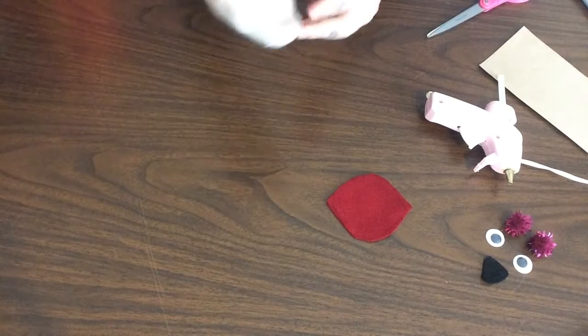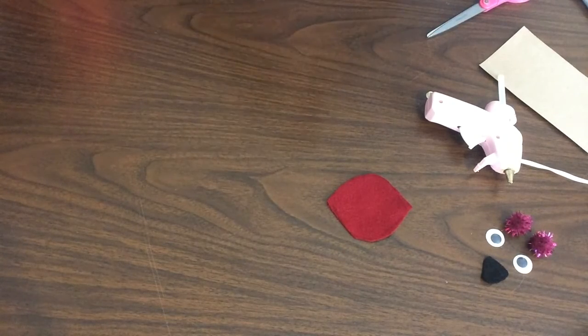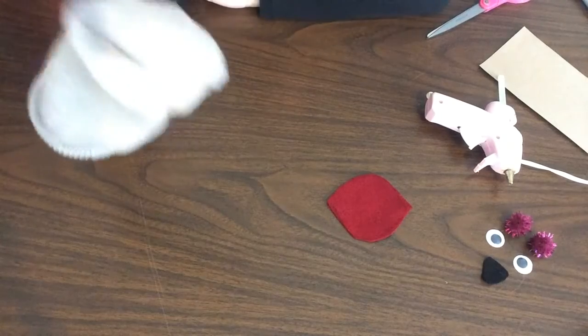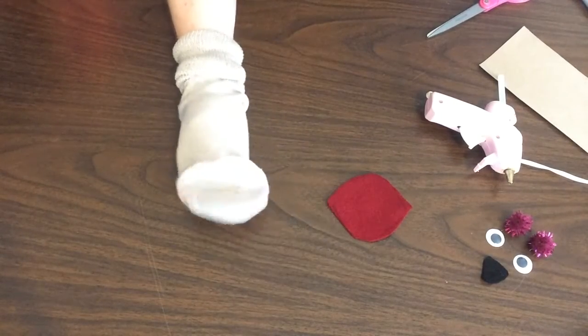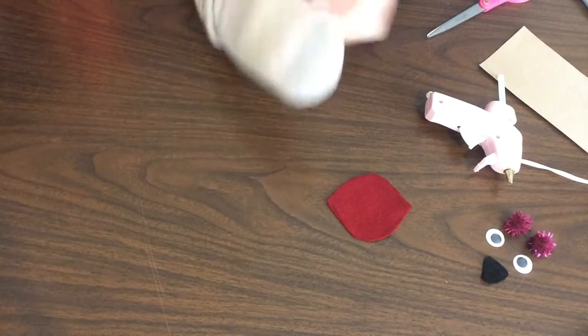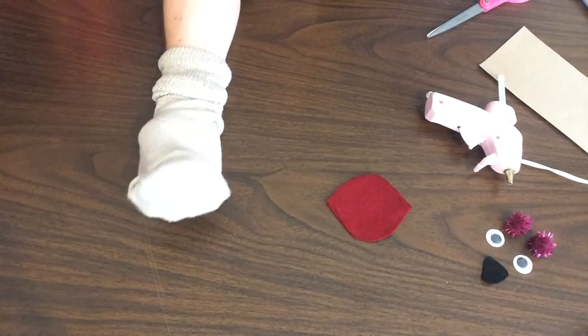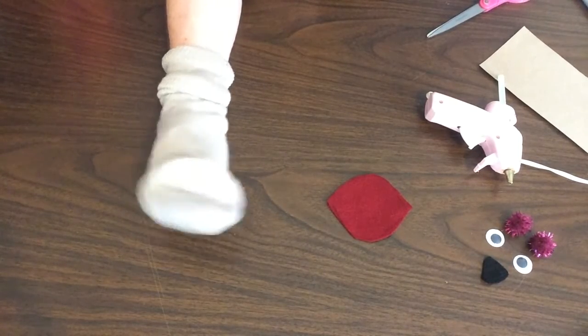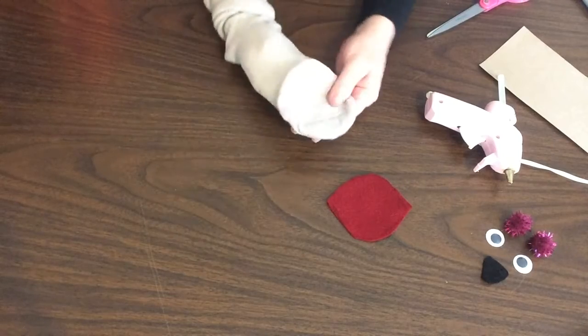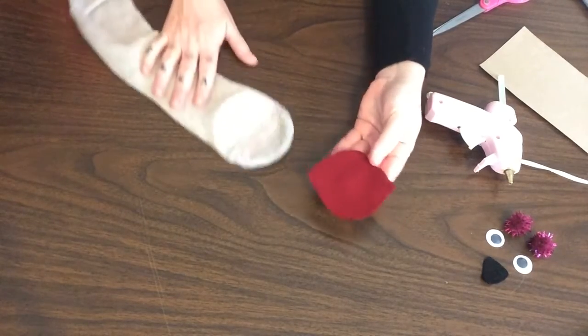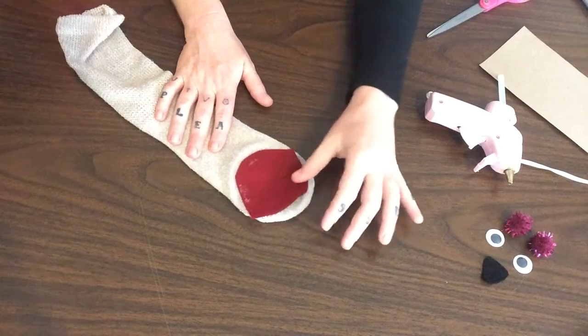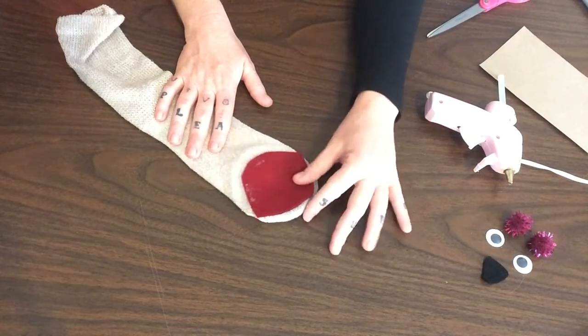So let's turn it inside out and stick our hand in there to get it formed in the correct way. Because it's going to form in the opposite direction. Now that it's inside out, take a moment and go ahead and glue on your mouth.